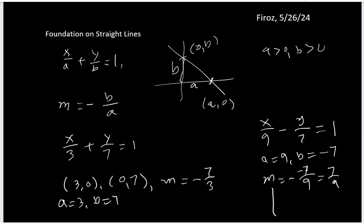And if you want to draw the picture, you can easily see that the x intercept a has 9 units here and the y intercept b has negative 7 units here. So then the line goes like this.